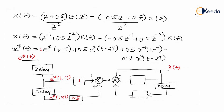X*(t) is available here. If I give a delay, it makes the expression X*(t minus T), with a positive gain of 0.5. One more delay makes the expression X*(t minus 2T), with a gain of minus 0.7. So here I write minus and the gain 0.7. This completes the concept of digital compensator implementation.